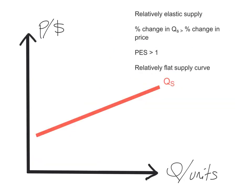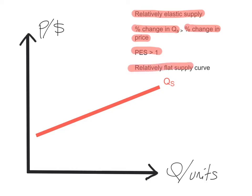When there is a higher percentage change in quantity supplied that is greater than the percentage change in price, the price elasticity of supply will be greater than 1 — we say we have relatively elastic supply. Supply is quite responsive to changes in price, so much that the percentage change in quantity supplied always exceeds the percentage change in price, and you will have a relatively flat supply curve. The price elasticity of supply will be greater than 1.